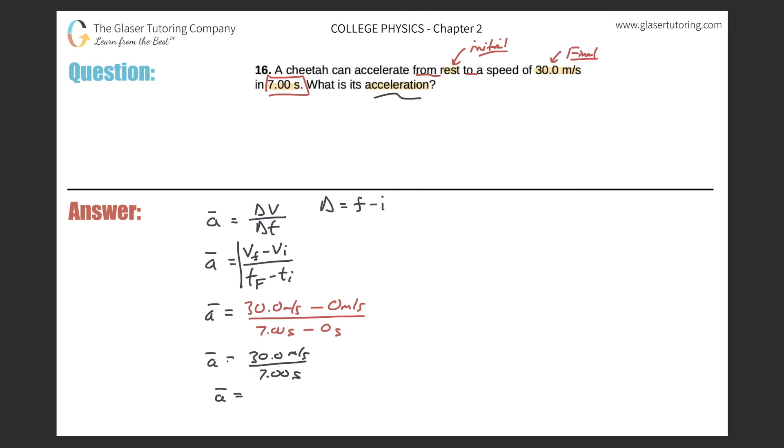So the average acceleration in this problem, very simple - 30 divided by 7.00, so we get 4.29. I'm going to round to three significant figures because I have three significant figures in both of my values. So this is 4.29 meters per second squared. And that would be the acceleration.